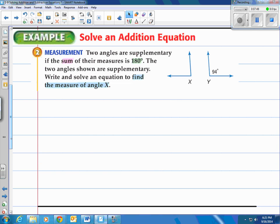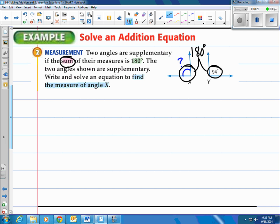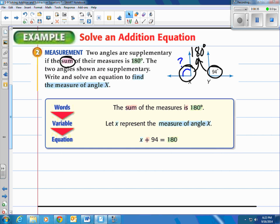Let's solve an addition equation with a word problem. It says two angles are supplementary if the sum of their measures is 180 degrees. The two angles shown are supplementary. Write and solve an equation to find the measure of angle x. So we're trying to figure out this angle right here. What is that? Well, they tell us that both of these angles are supplementary, which means they add up to 180 degrees. That means sum. That means the answer to the addition problem of 94 plus this angle equals that right there. 180 degrees. Both those put together make 180 degrees. Well, let's take a look at how they put it together with the words.